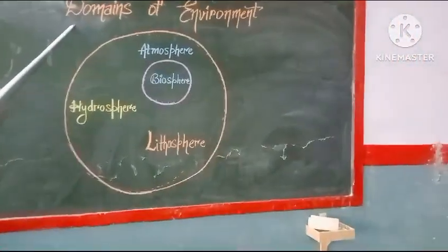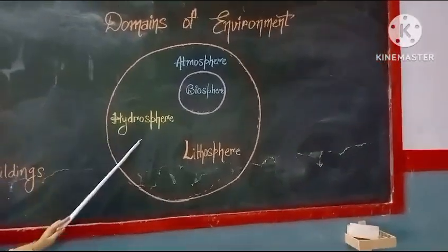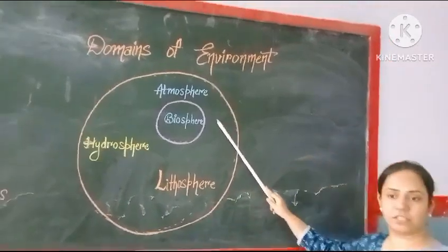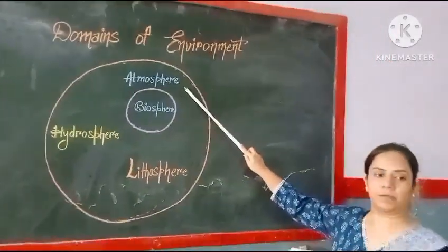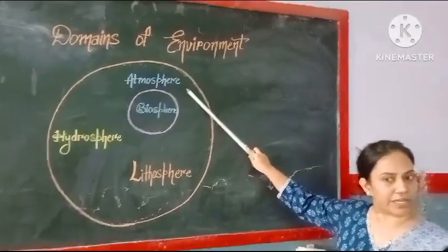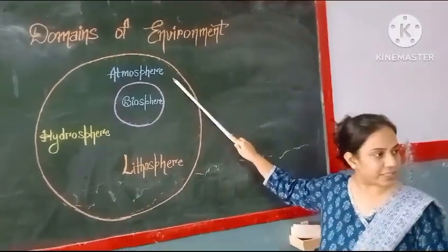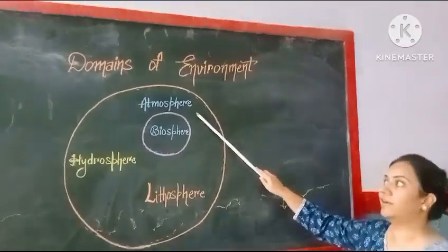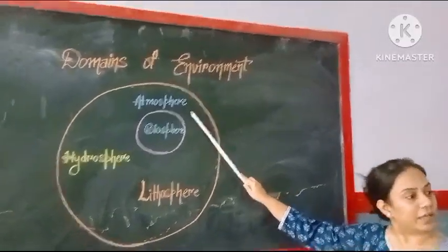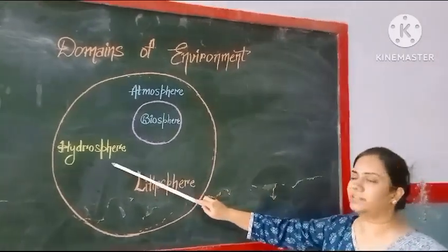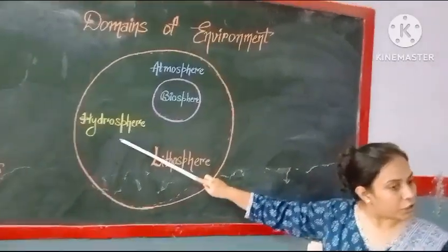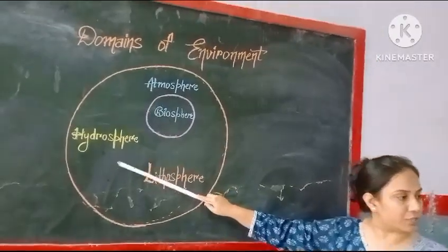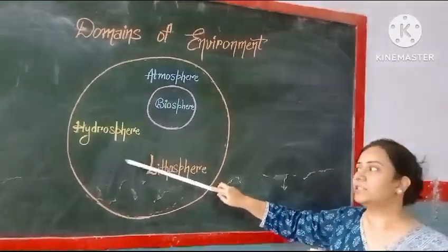Parks, buildings — which means there are four domains of environment. How many domains? Four. First: Atmosphere. The one that is related to water is called the Hydrosphere.